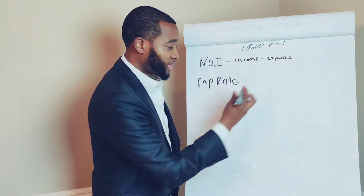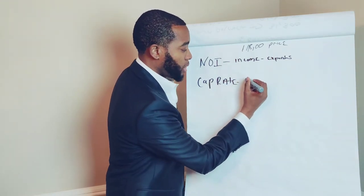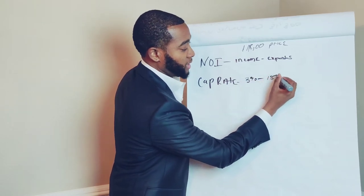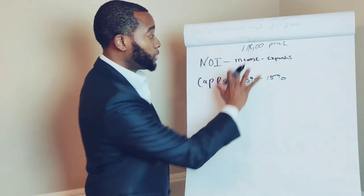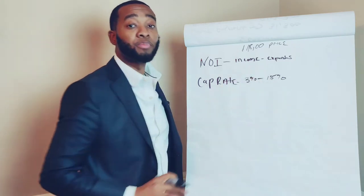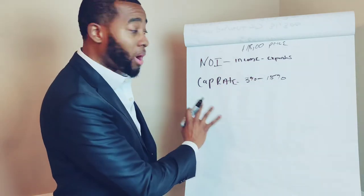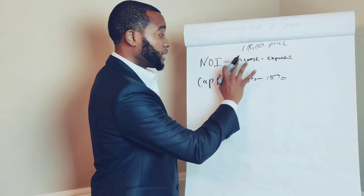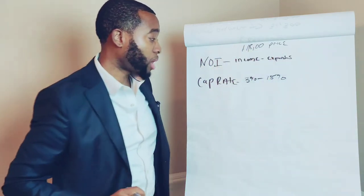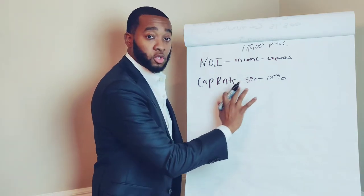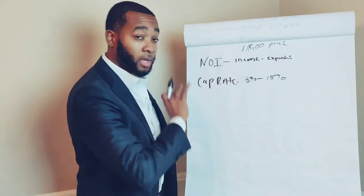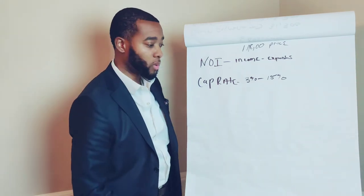Your cap rate is assuming that if you were to purchase this property at the full asking price of $118,000 cash, you're going to see a cap rate — typically it's going to be anywhere between three percent to about fifteen percent. So assuming you pay $118,000 cash, they are basically saying you'll make between three to fifteen percent on this property per year — that's your return, your yield.